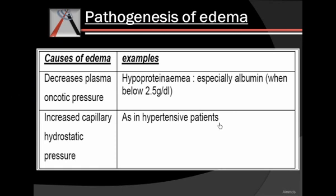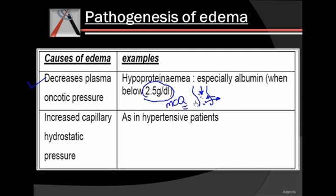What could be the causes of edema? As we know the mechanism that maintains fluid inside the vessel or drives fluid outside, we can guess the causes. The first cause is decreased plasma oncotic pressure. If the oncotic pressure that pulls fluid into the blood vessel is decreased, the fluid will tend to go out. This happens when there is less protein — examples are hypoproteinemia, especially albumin, when it gets below 2.5 grams per deciliter. There are many MCQs on edema, so please do not neglect this area.